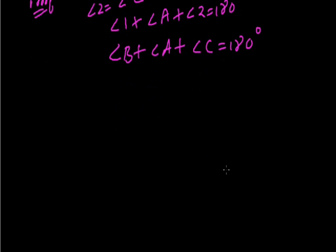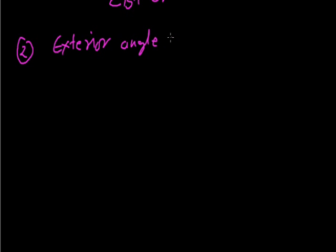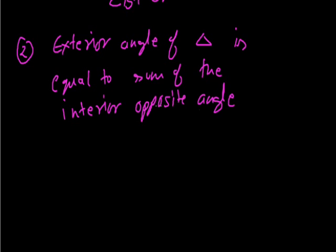Now the next important property of the triangle, based on angles, is that the exterior angle of a triangle is equal to the sum of the two interior opposite angles.